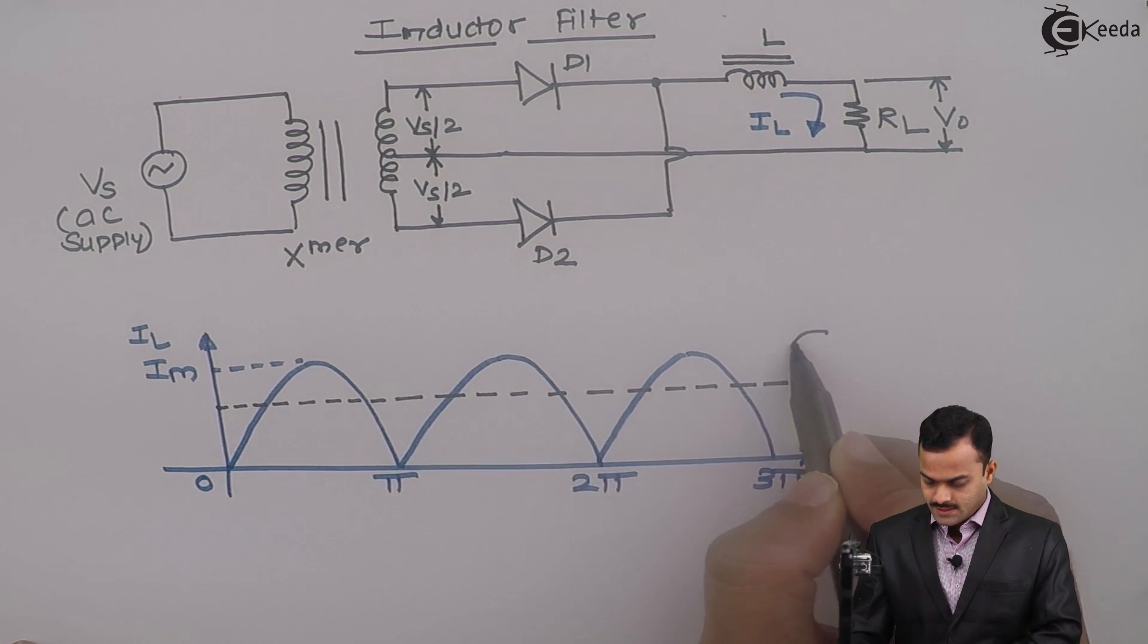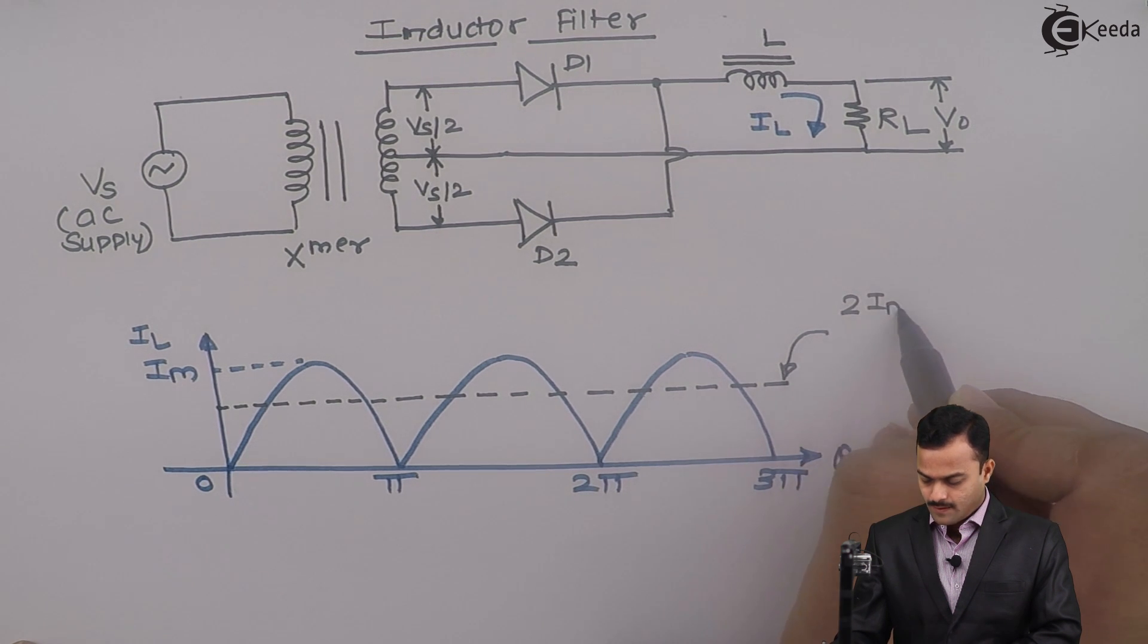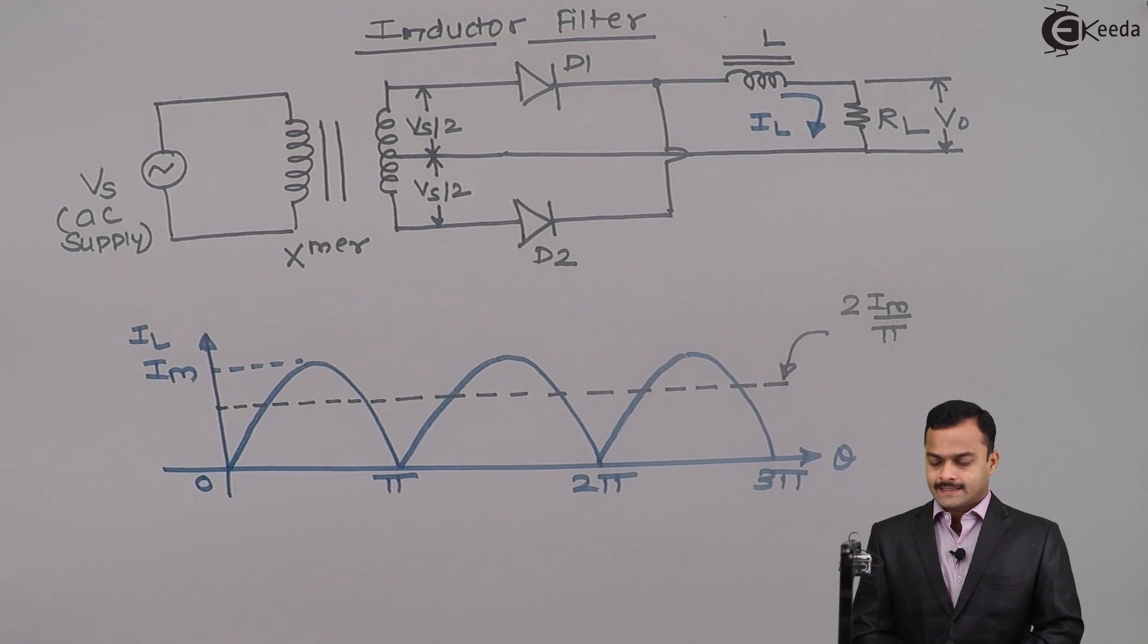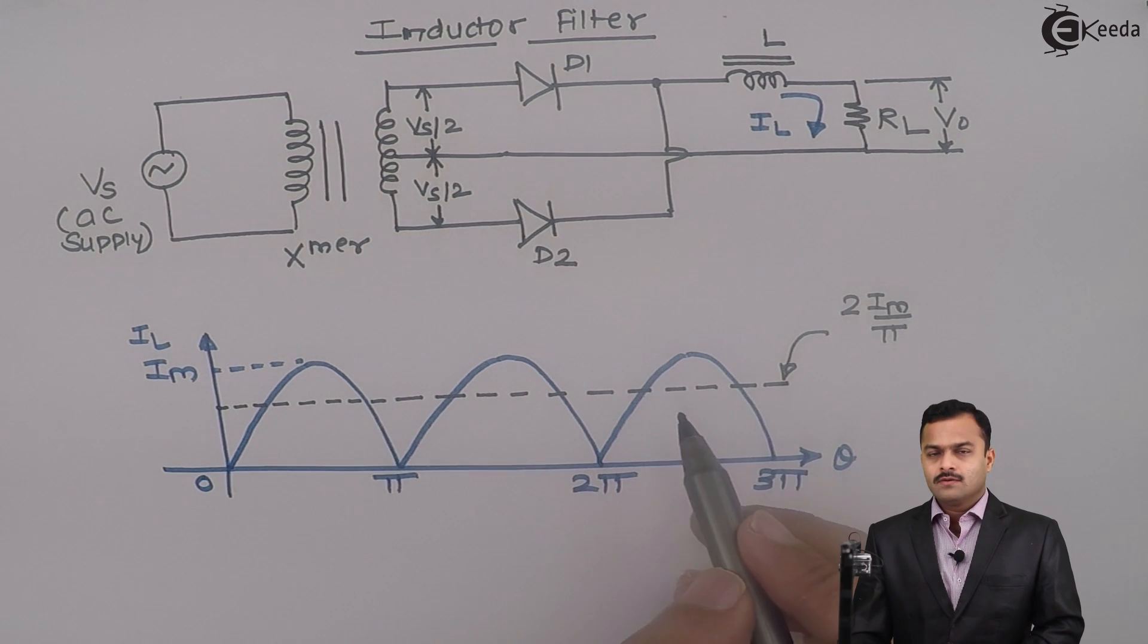This is a peak current IM and I am getting average current that is 2 IM by pi. So this current is 2 IM upon pi in the case of full wave rectifier. This is the output current I am getting in the case of full wave rectifier without filter.